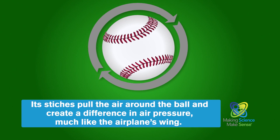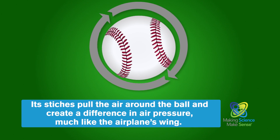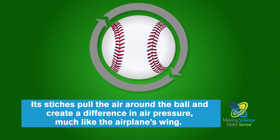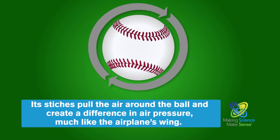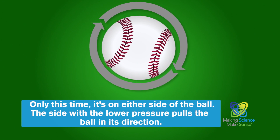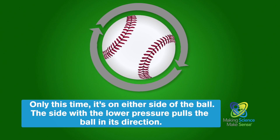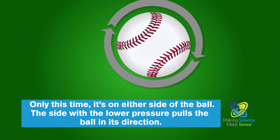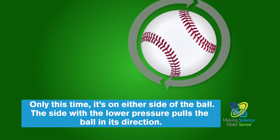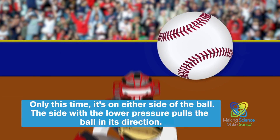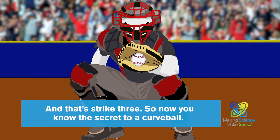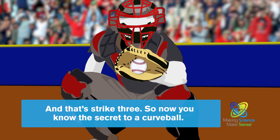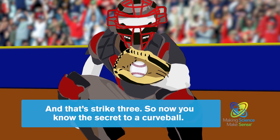Its stitches pull the air around the ball and create a difference in air pressure, much like the airplane's wing, only this time it's on either side of the ball. The side with the lower pressure pulls the ball in its direction. And that's strike three! So now you know the secret to a curveball.